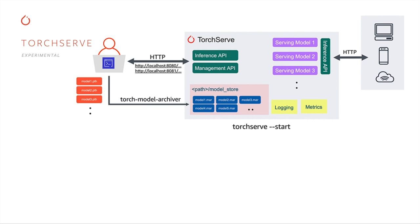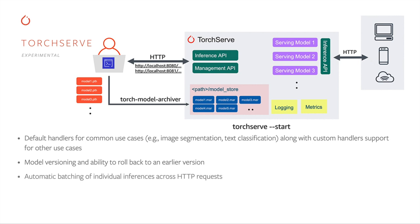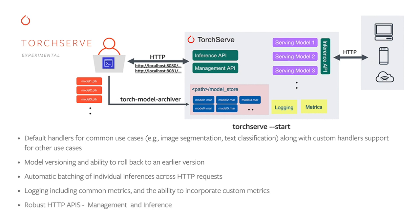TorchServe loads instances of your model or models in individual process spaces and distributes incoming requests to them. It has data handlers covering common use cases including image classification and segmentation, object detection, and text classification. It allows you to set version identifiers for models and simultaneously serve multiple versions. It can optionally batch input requests from multiple sources to improve throughput, features robust logging and custom metrics, and has separate RESTful APIs for inference and model management, which may be secured with HTTPS.